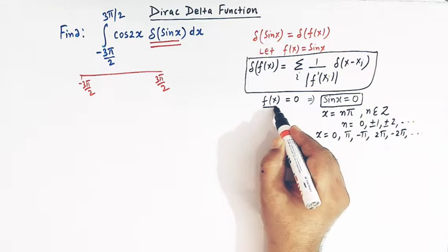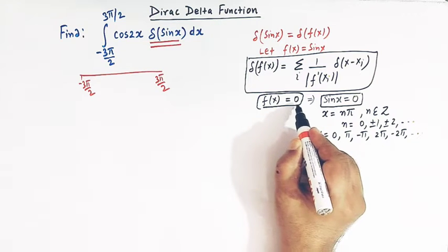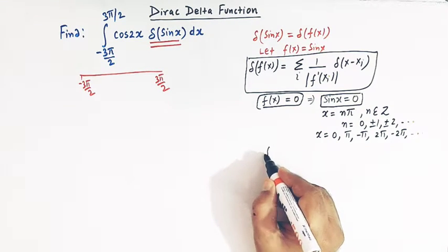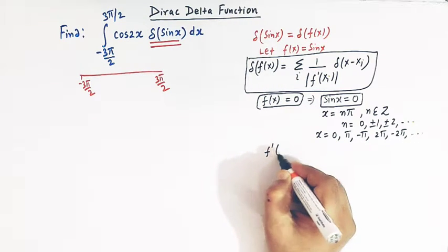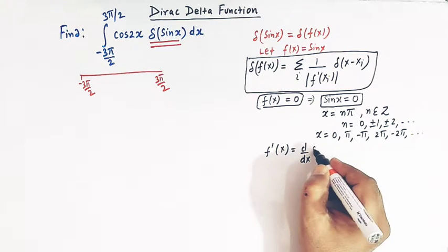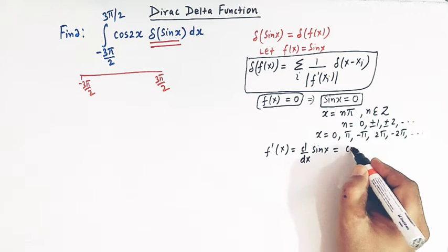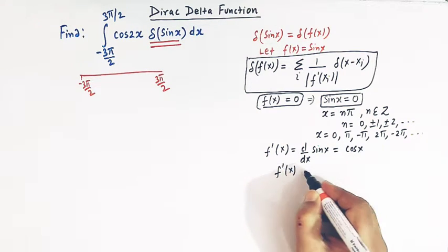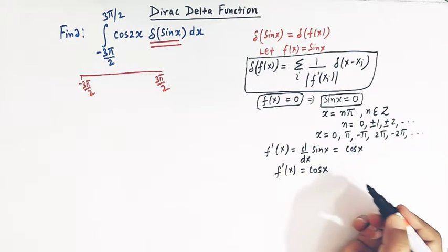Once we have obtained the solutions of f of x equal to 0, we find the derivative of f of x. So f prime of x is given by the derivative of sin x, and we know that the derivative of sin x is cosine x. So f prime of x is equal to cos of x.